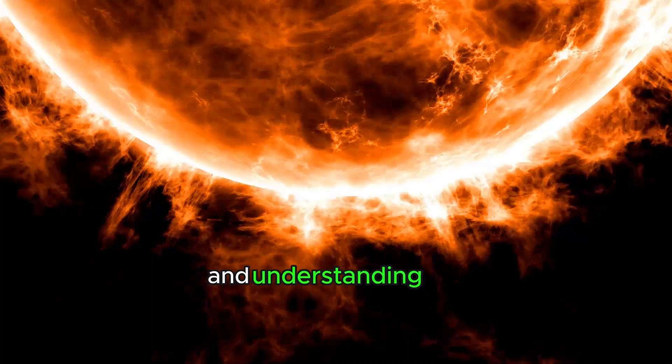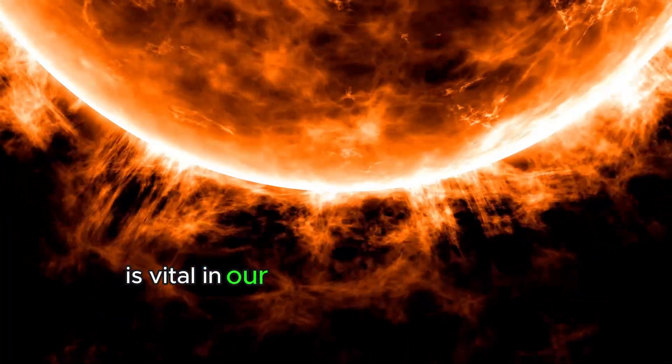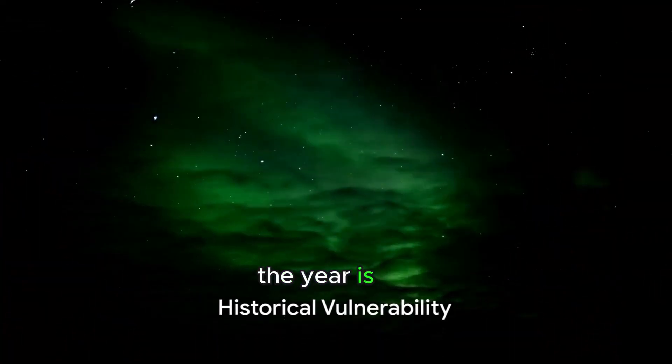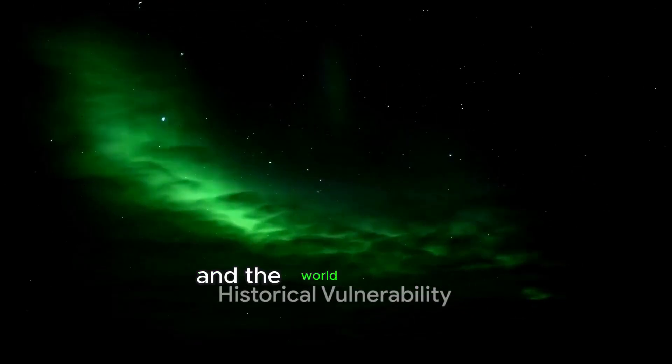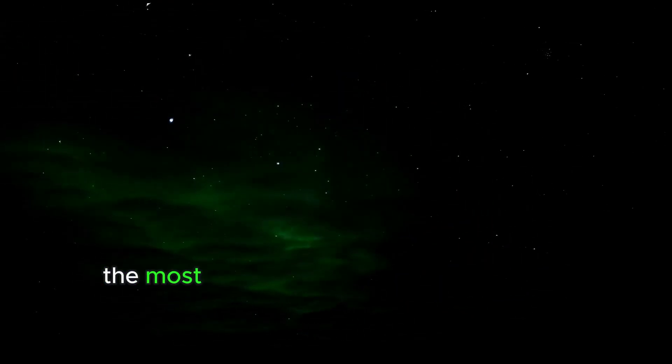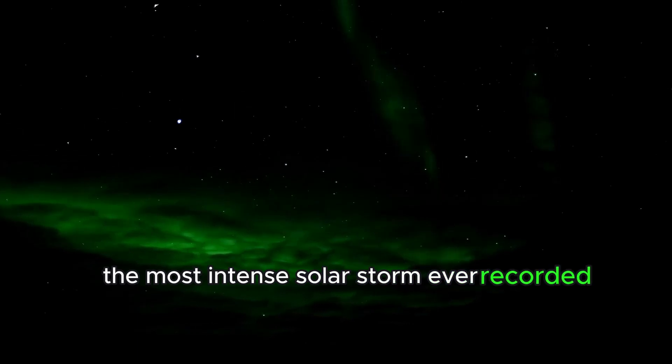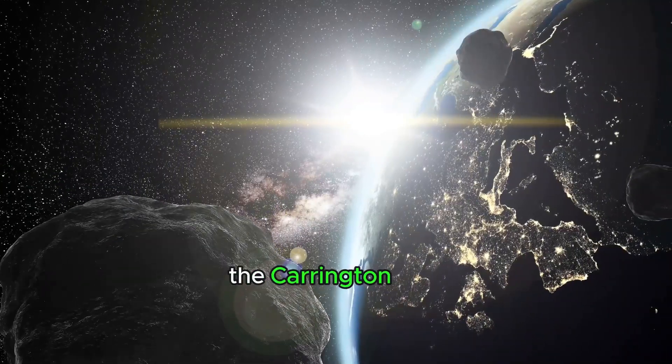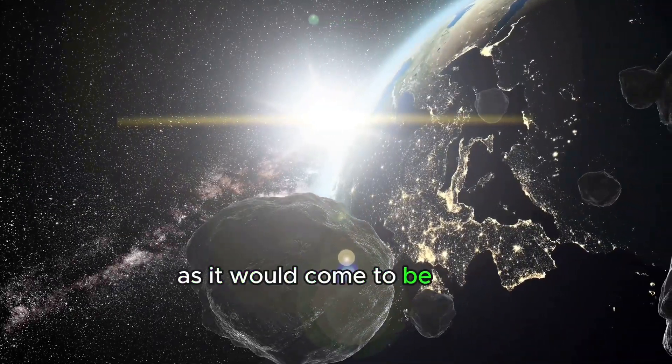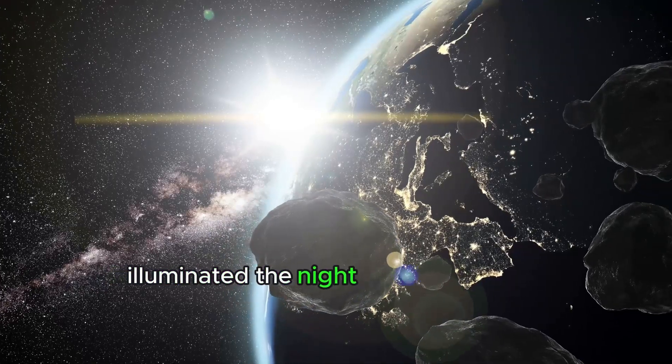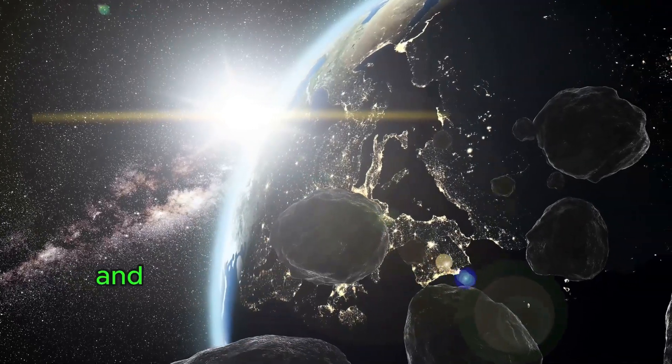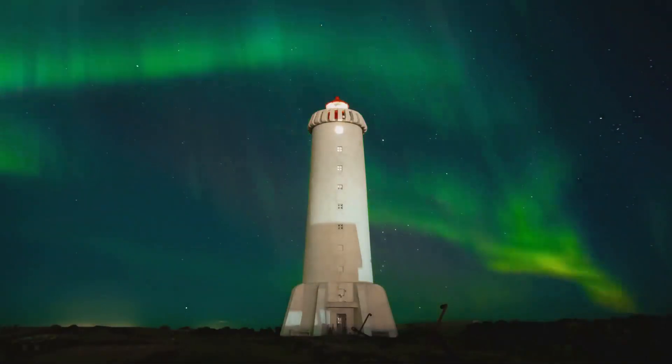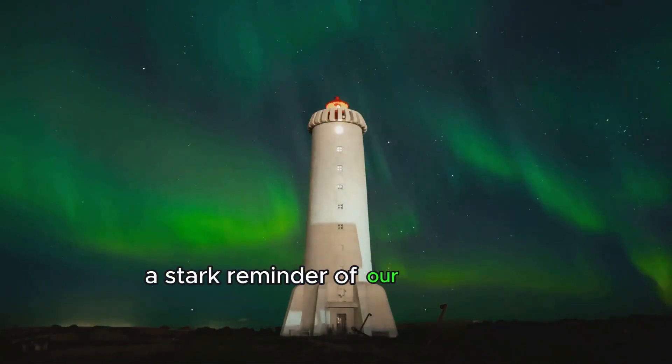The year is 1859 and the world experiences the most intense solar storm ever recorded, the Carrington Event. As it would come to be known, it illuminated the night skies with auroras and disrupted telegraph systems worldwide, a stark reminder of our vulnerability.